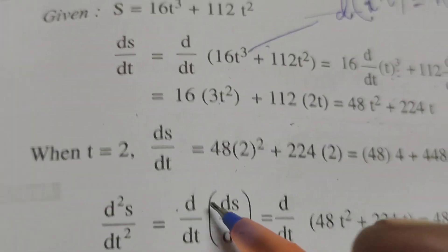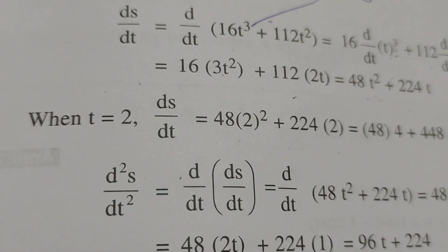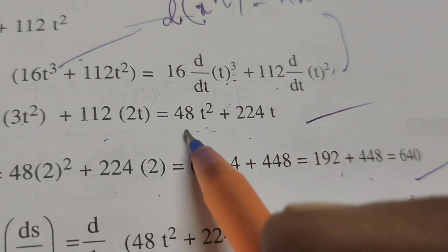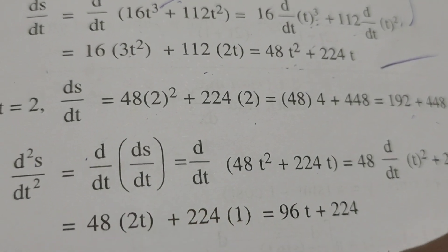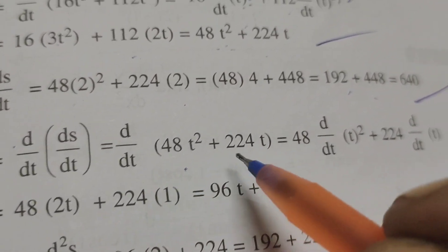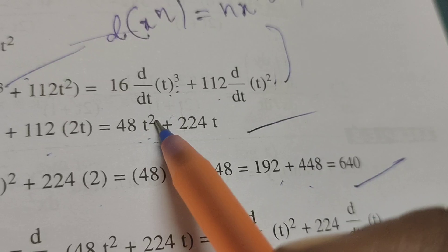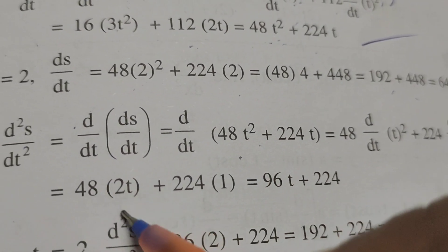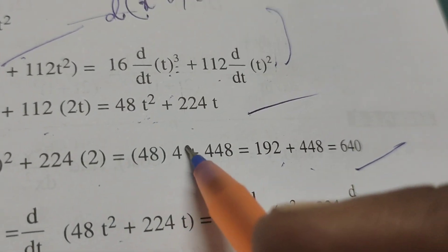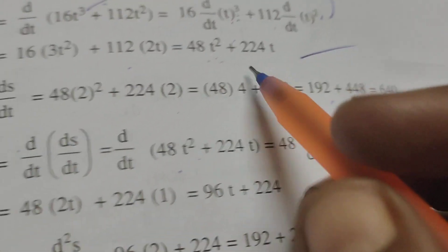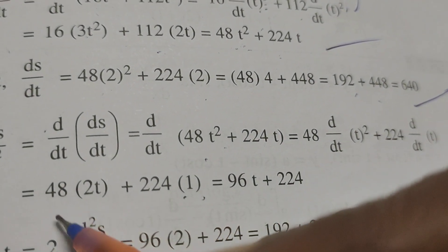Next, to find d²s/dt², differentiate again. 48 is a constant, and using the same formula, differentiation of t² gives 48 times 2t, plus 224 times the derivative of t, which is 1. That is 96t plus 224.